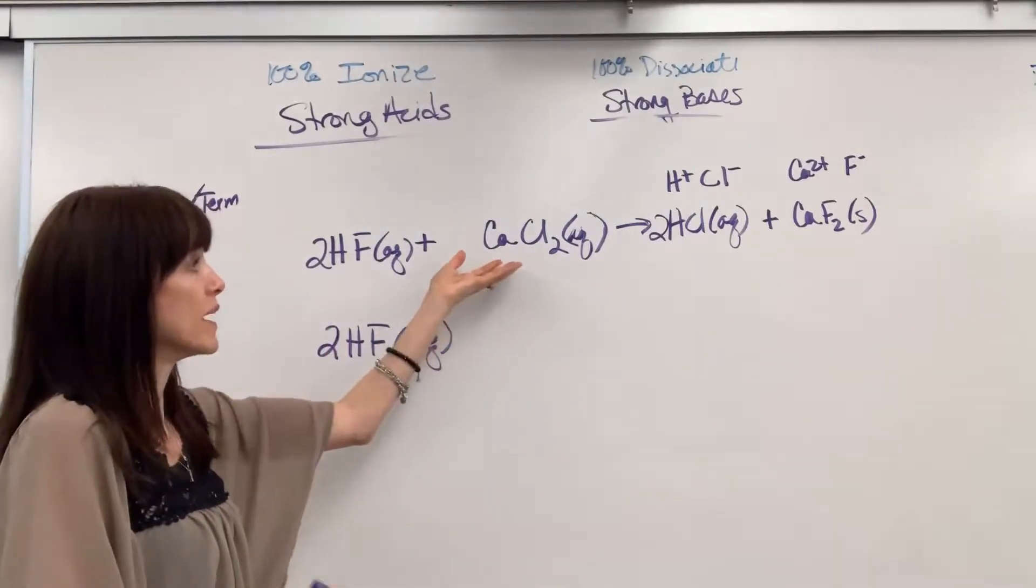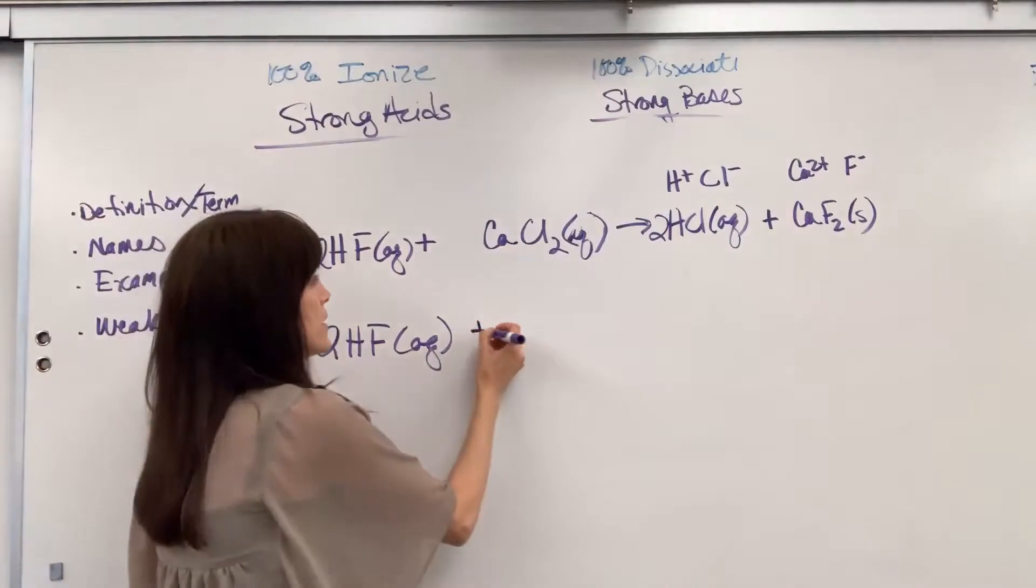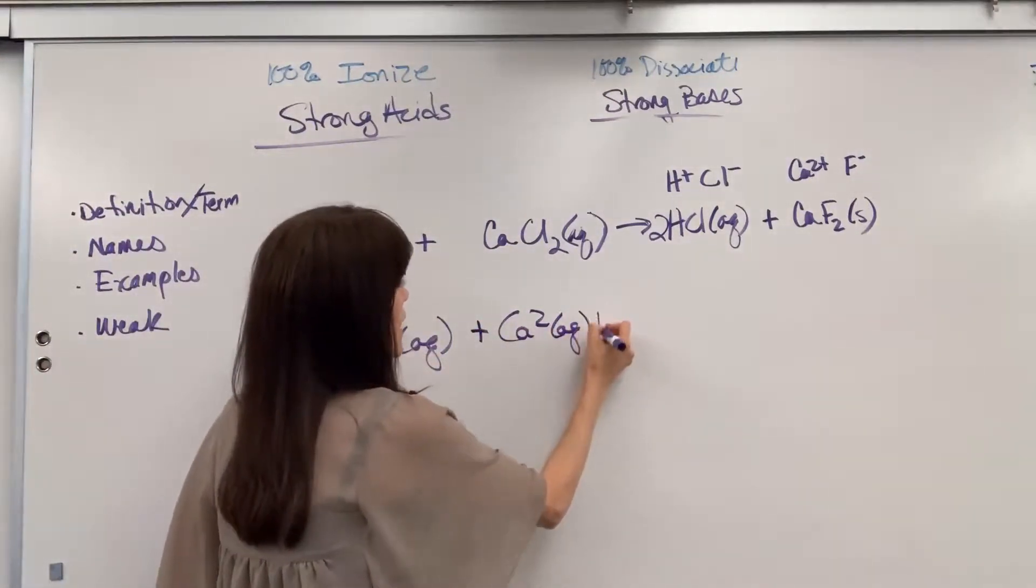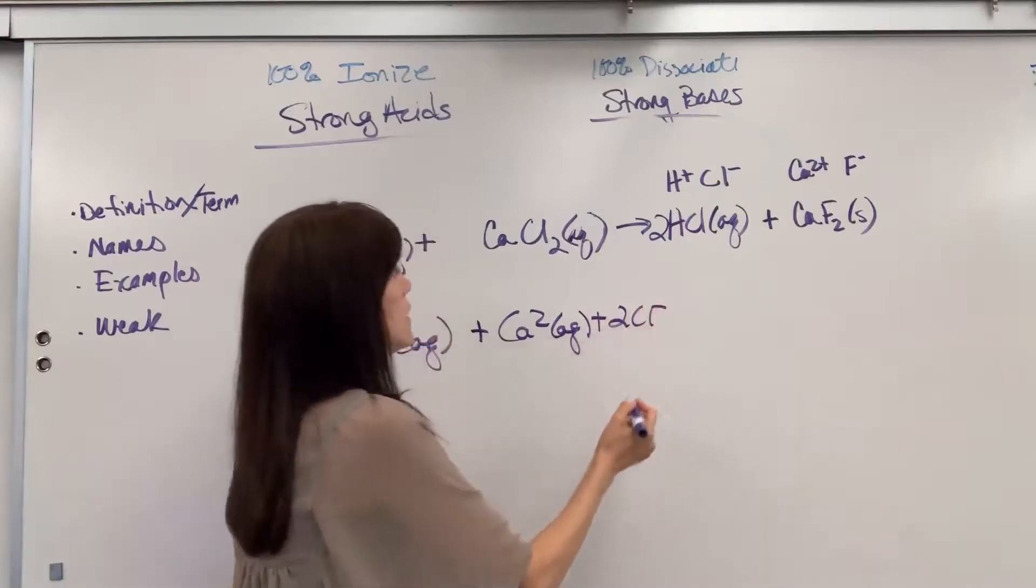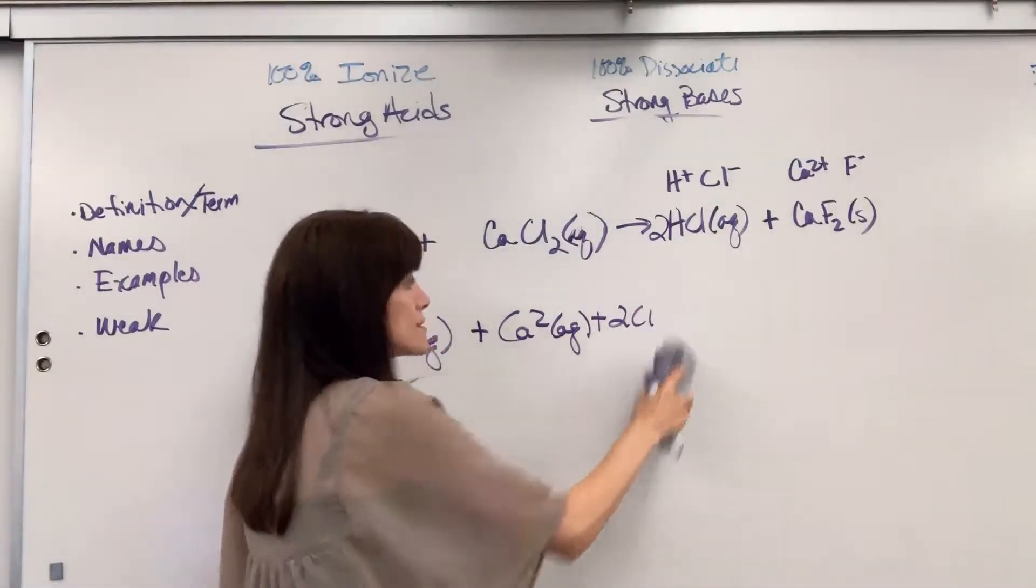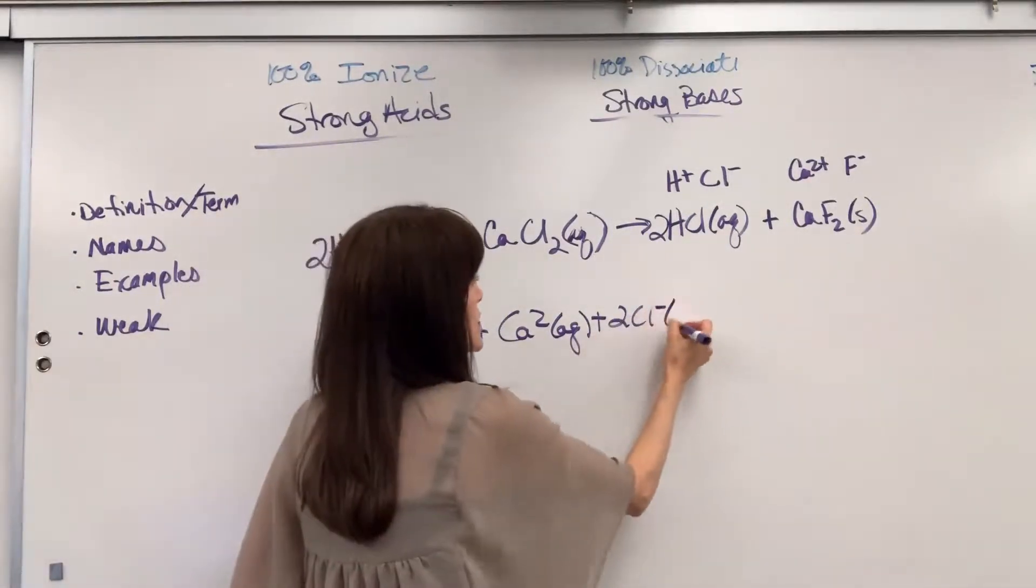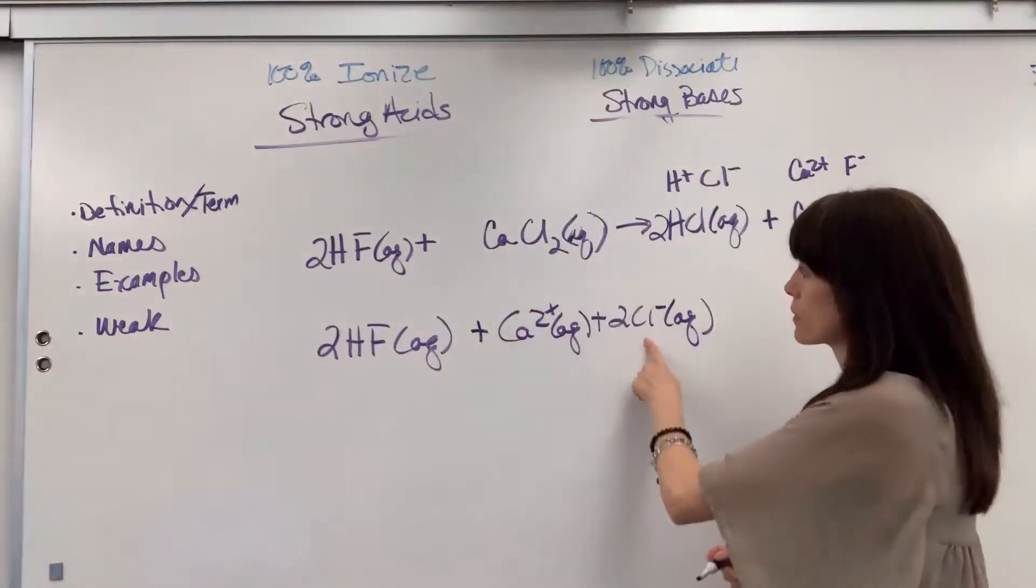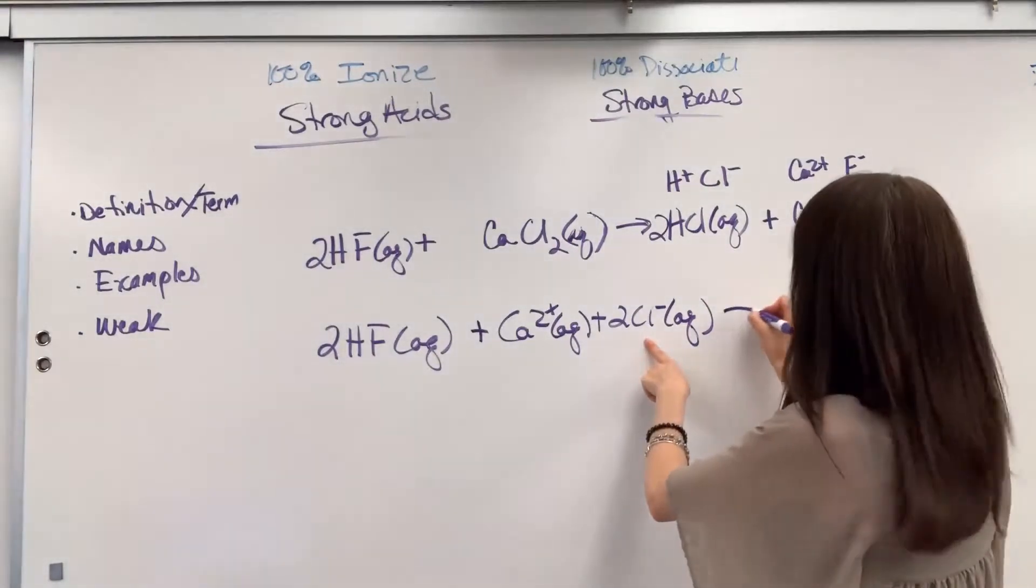Now, everything else is aqueous, I can dissociate. This calcium chloride, it is an ionic compound that's soluble. It's going to completely dissociate. And I had a calcium 2+, and two of the chloride ions, yields...